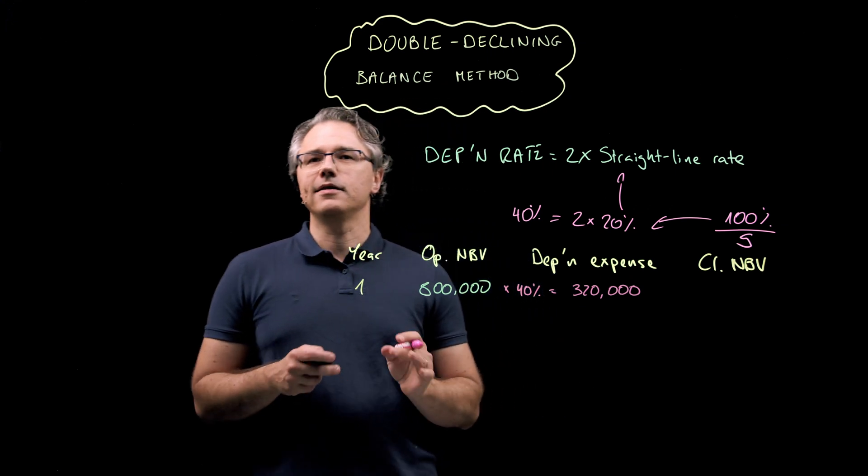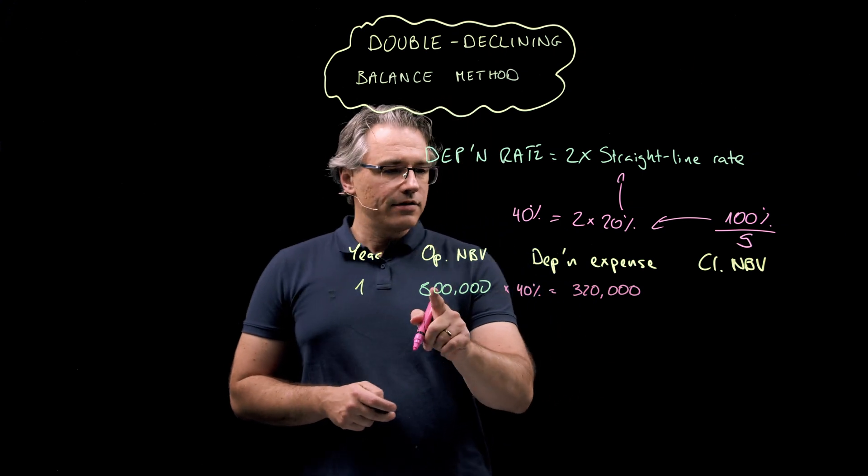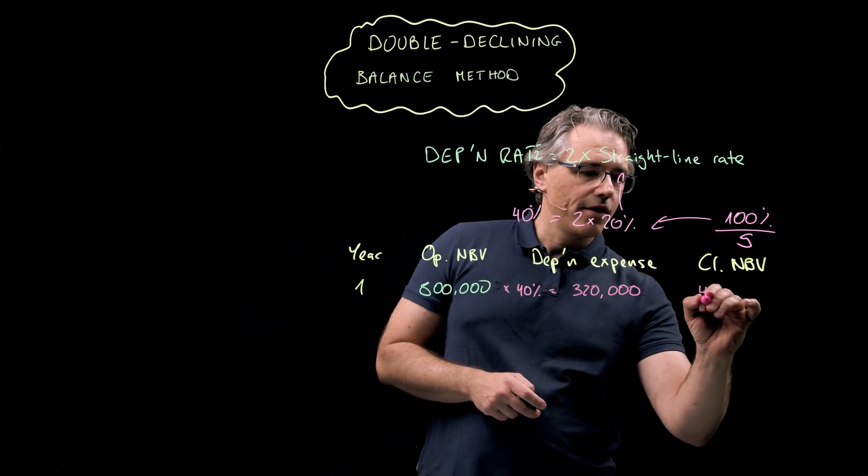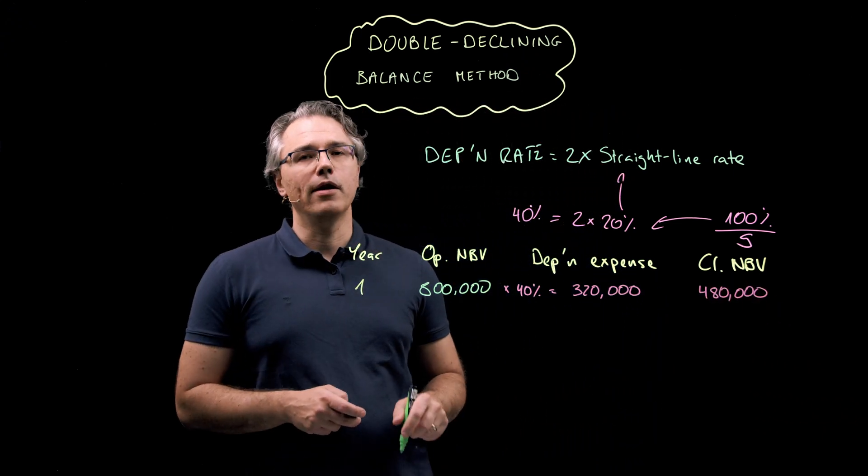800,000 times 40% is going to give 320,000. I don't necessarily need a calculator for that. And what does this produce in terms of closing NBV? 800,000 minus 320,000, that's going to give 480,000. Nice and simple in year one.